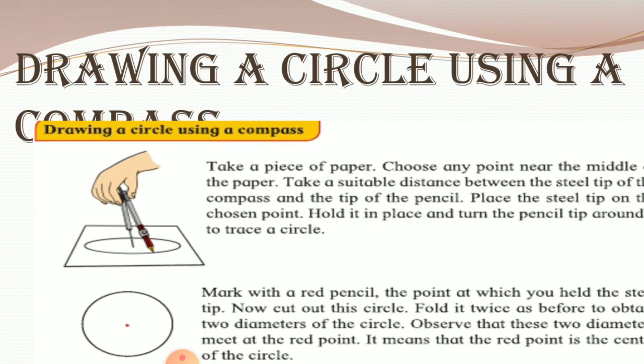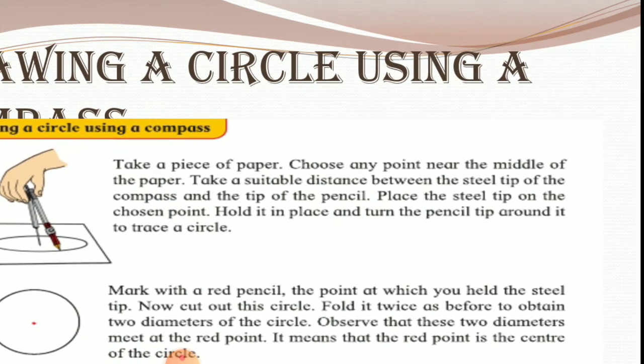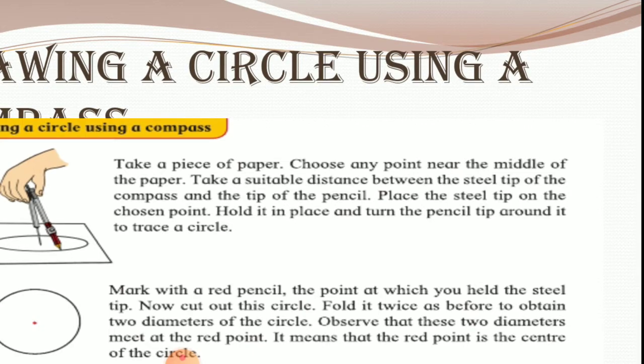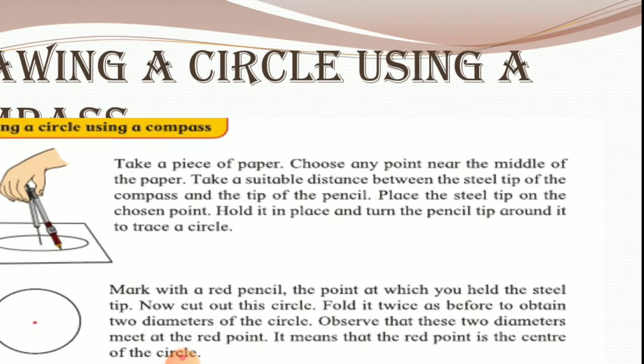Take a piece of paper, choose any one point near the middle of the paper. Take a suitable distance between the steel tip of the compass and the tip of the pencil. Place the steel tip on the chosen point, hold it in place, and turn the pencil tip around it to trace a circle.